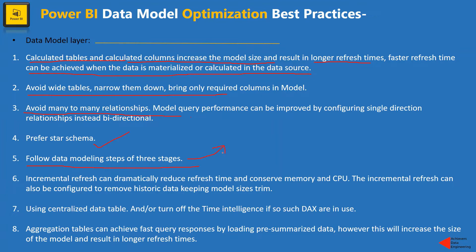If you have a big data model, incremental refresh can dramatically reduce the refresh time and conserve memory and CPU. Incremental refresh avoids refreshing the entire dataset every time; it refreshes only the latest data for the number of days, months, or years defined during setup.